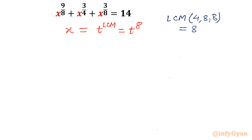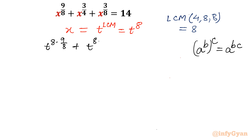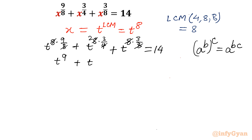Let's substitute into the original equation. Writing t^8 and using the property (A^B)^C = A^(BC), I multiply directly: t^(8 × 9/8) + t^(8 × 3/4) + t^(8 × 3/8) = 14. Now canceling: 8 cancels with 8, 4 and 8 cancel to give 2, and 8 cancels again. What is left is t^9 + t^6 + t^3 = 14.